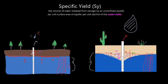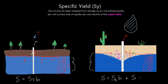This circles back to the ultimate definition of storativity for both confined and unconfined. For confined aquifers, storativity equals specific storage (Ss) times aquifer thickness (B). For unconfined aquifers, storativity also equals specific storage times aquifer thickness, plus specific yield (Sy). Because the specific yield term is so much bigger than the Ss×B term, the smaller term is pretty much negligible.